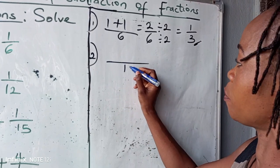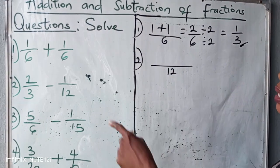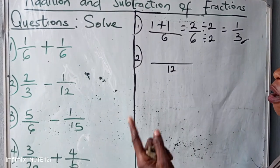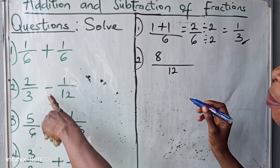So we choose twelve here, pick twelve as our LCM. How many three can we have in twelve? Three times what will give us twelve? Four. Four times two will give you eight. Minus.